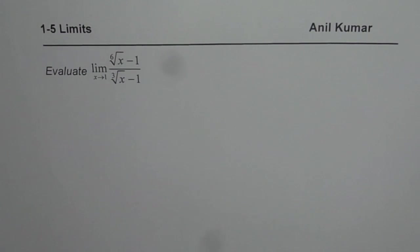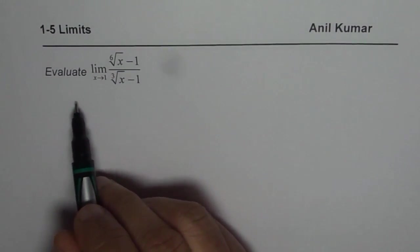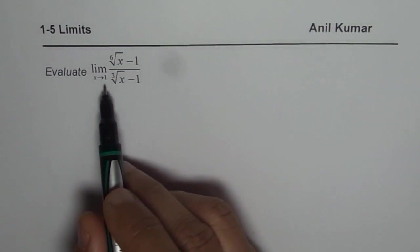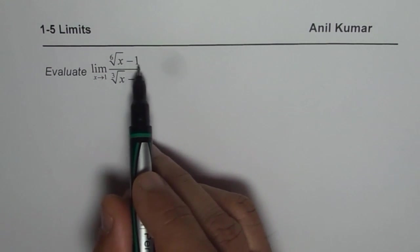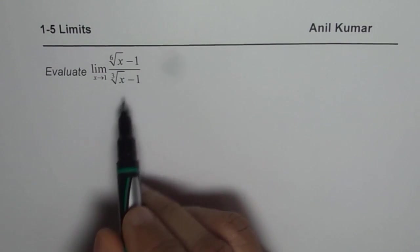I am Anil Kumar and now let us continue with finding limits where we get indeterminate form. The question here is, evaluate limit when x approaches 1 for 6th root of x minus 1 divided by 3rd root of x minus 1.